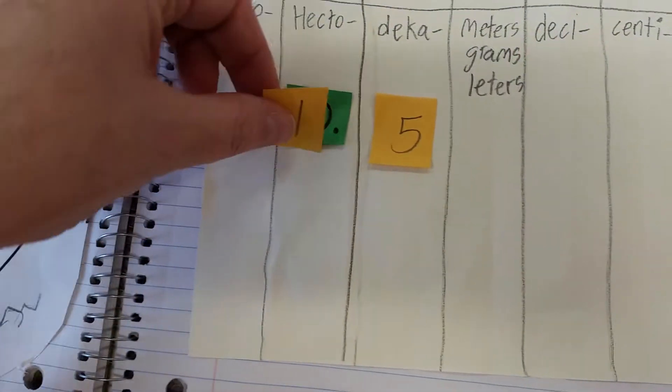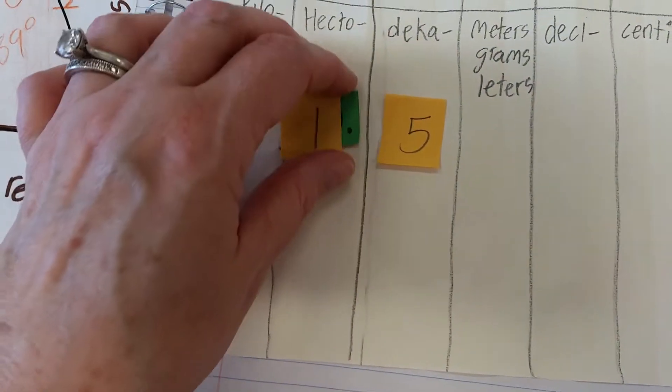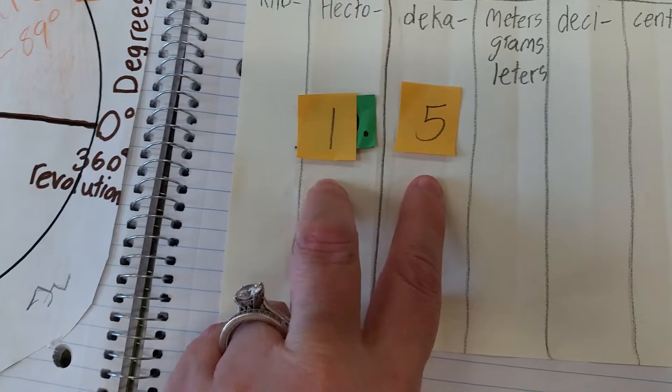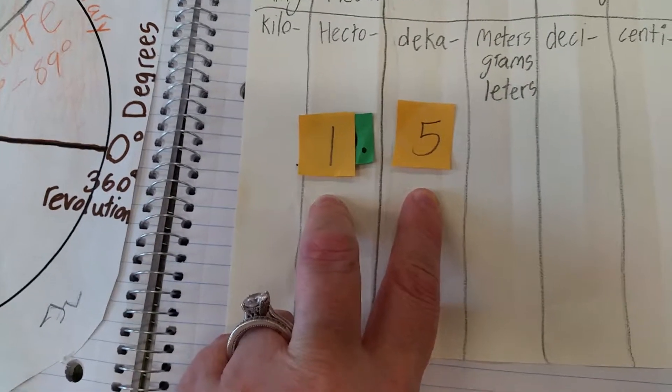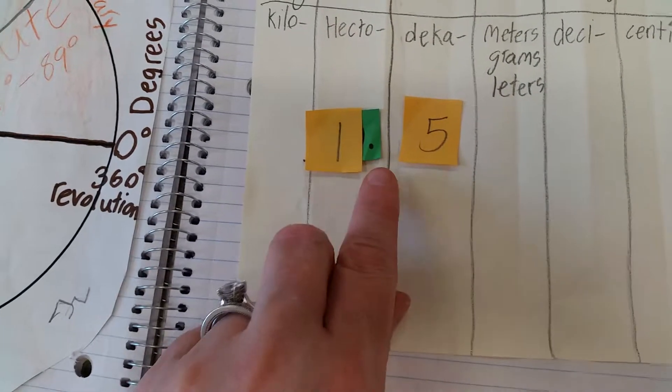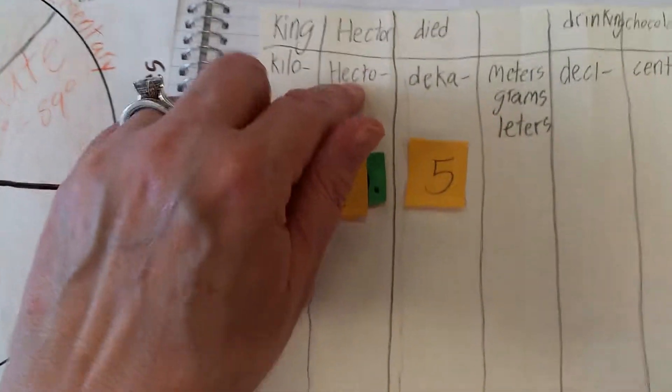So that means he would move to the next place. And now you can see that the decimal point is in between. So 15 decameters is the same as 1.5 hectometers.